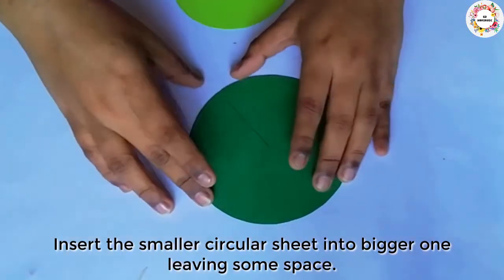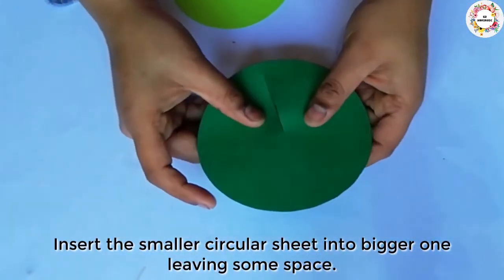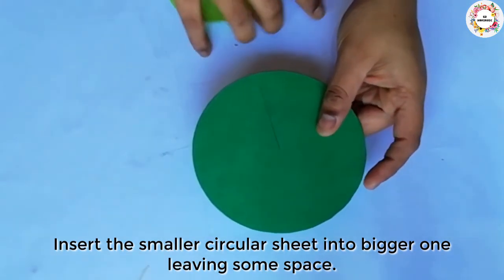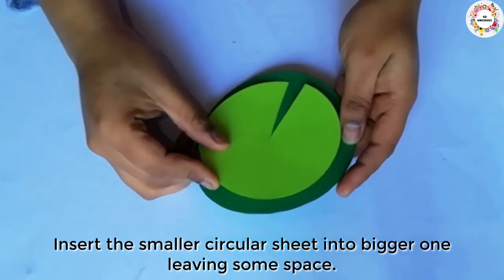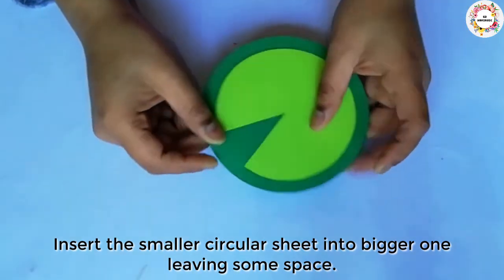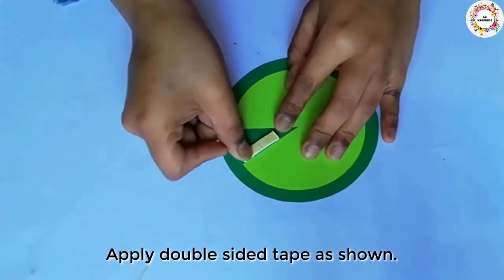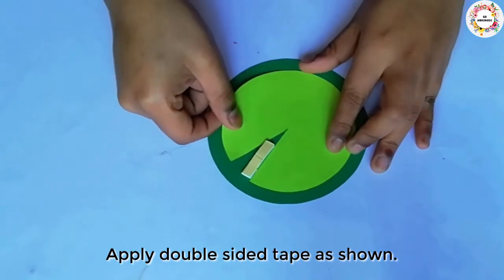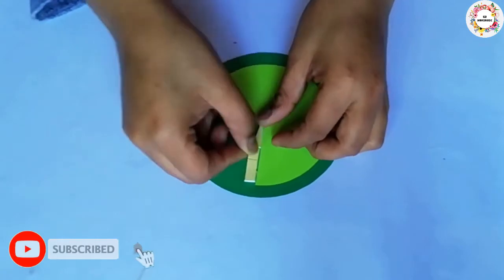Now we will insert the small sheet into the large sheet. Then we will secure them together with double-sided tape.